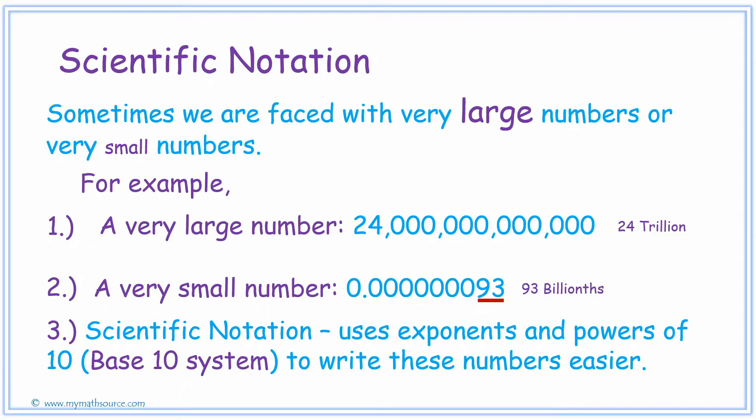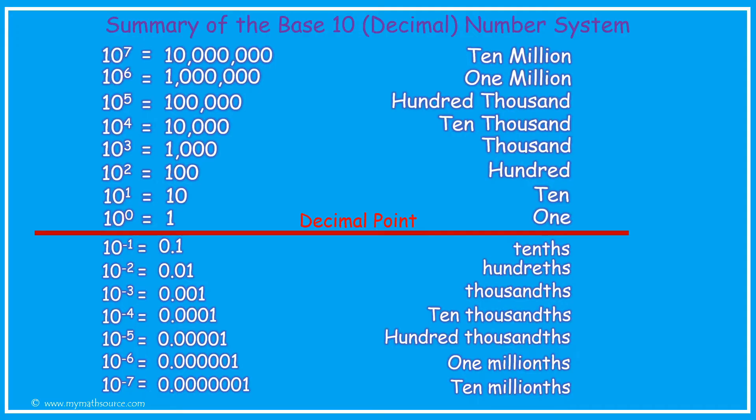Now scientific notation allows us to use the exponents and powers of 10, also known as the base 10 system, to write these numbers in an easier format. Remember this chart? We can use this concept to write the very large numbers and the very small numbers in an easier way.